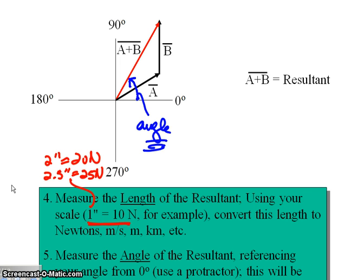You do not measure this angle. That's wrong. You do not measure this angle. Wrong. You do not measure this angle. Wrong. You measure the angle from zero degrees like that.